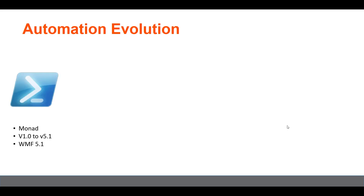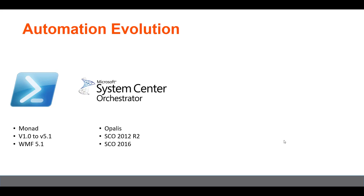Let's take a look at how automation evolved over time. It all started with PowerShell, which was code-named Monad. PowerShell grew from version 1.0 to the current version, 5.1, which is part of Windows Management Framework 5.1. Next came System Center Orchestrator, a tool called Opalis that was acquired by Microsoft and worked upon significantly, with the latest version being System Center Orchestrator 2016.